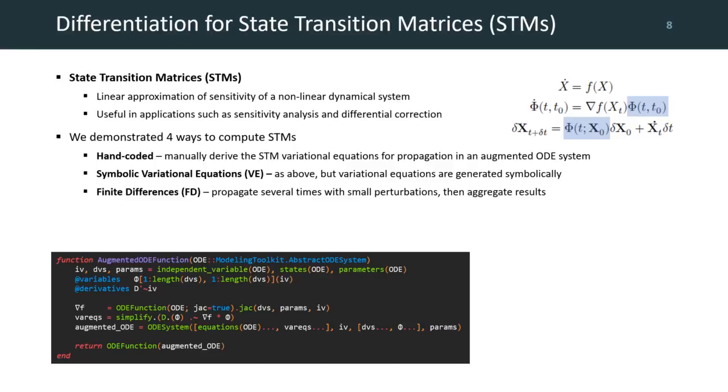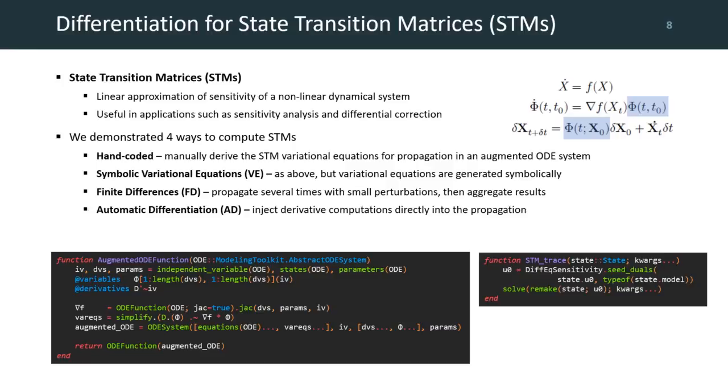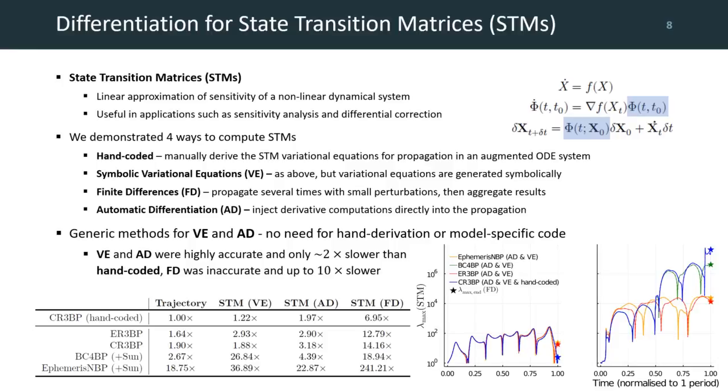Finite differences, in which we simply propagate the trajectories multiple times with small perturbations and then aggregate the resulting differences; and automatic differentiation, in which we inject so-called dual numbers directly into the propagation. And these compute their own derivatives at the same time as the simulation, requiring no other code. Now, both the symbolic and automatic differentiation methods are generic, so they support any of the four models that we defined. And they were found to be only two times slower than a hand-coded approach, which was only available for the simplest model, and as well as greatly outperforming the finite differences method in both speed and accuracy.